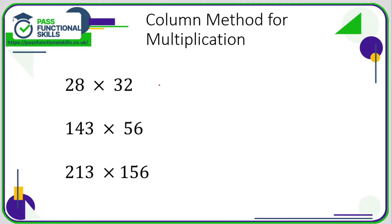Let's take a look at multiplication. If you don't have access to a calculator, you're definitely going to need a written method to work out your multiplication questions. There are two ways you can do it: one is called the column method and one is called the grid method. I'll show you both. Play around with both and work out which one you find easier and go with that one. I personally prefer the column method, but that could be because that's just how I was taught at school.